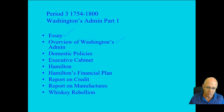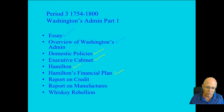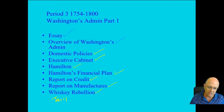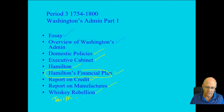We're going to look at Washington's domestic policies, his executive cabinet, Hamilton, Hamilton's financial plan, report on credit, report on manufacturers, whiskey rebellion, and more. There are other things like the tariff and the assumption that we have to make sure you look at — that financial plan is going to be a big deal.